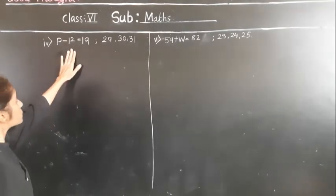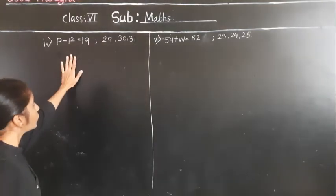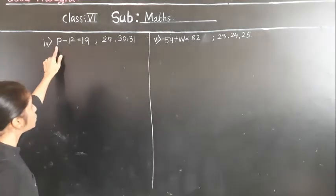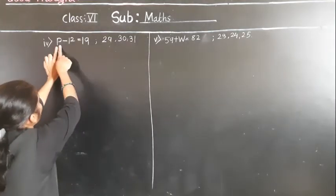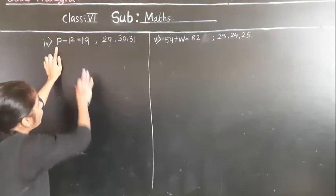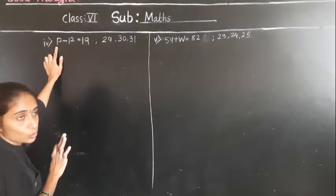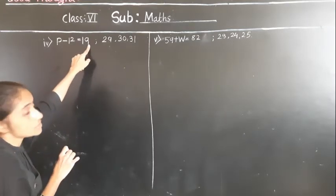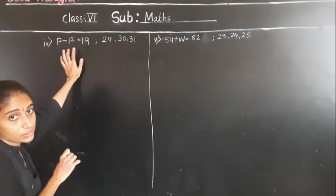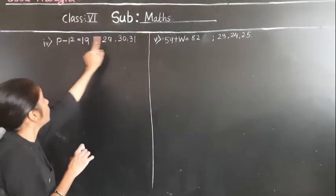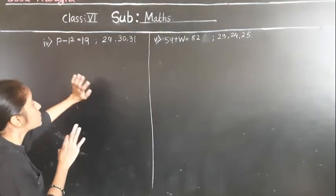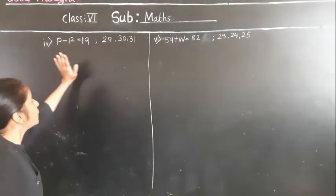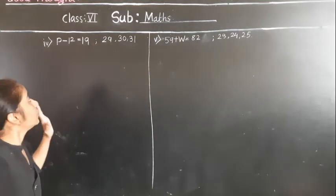Now question number 4: P minus 12 is equal to 19. By using which number will we get both sides equal? If you put 29 — check: 29 minus 12, the unit place is 9, so this number will not give 19. Try 30 minus 12 — that also won't give the right answer. Try 31: 31 minus 12 gives us 19.